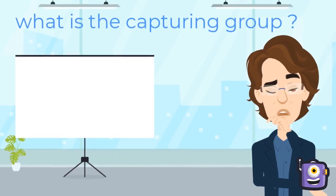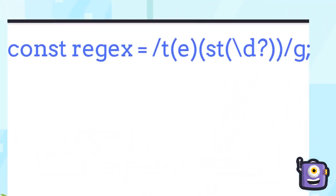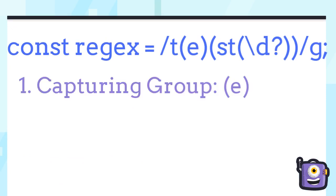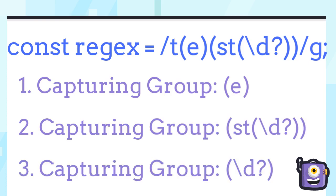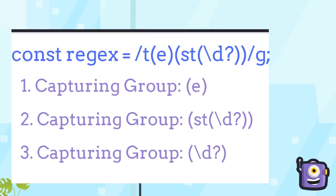You must be thinking, what is this capturing group? In our example, the regex has three capturing groups. The first group is e, the second group is st with any digit, and the third is any digit.